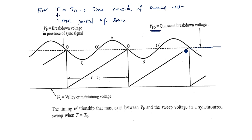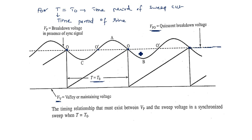Without any synchronous or triggering input, the capacitor charges to VPO, the UJT fires, and the process repeats. The capacitor charges up to the peak voltage, discharges to the valley voltage VV, then charges again — this continues. All the zero-crossing points (O points) correspond to the quiescent breakdown voltage. Since we are not disturbing this voltage, the time period remains T equal to T0.